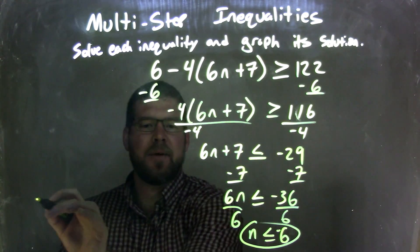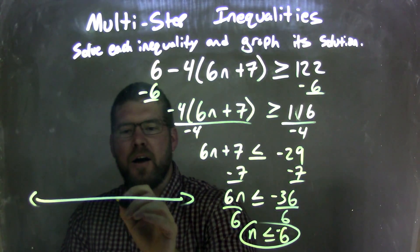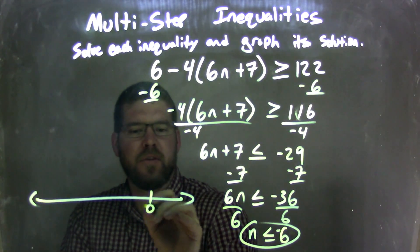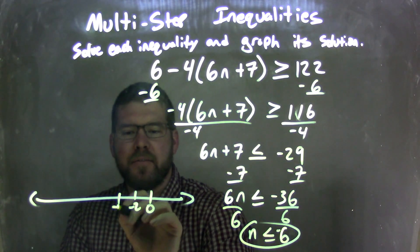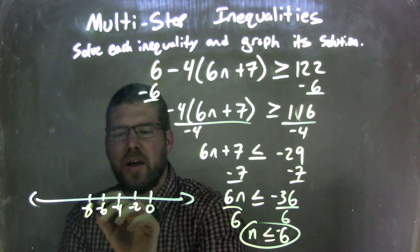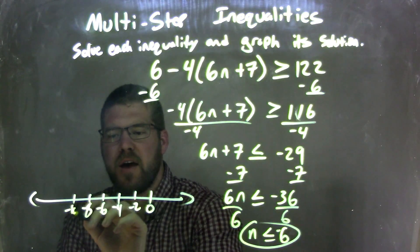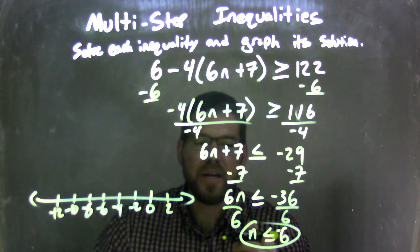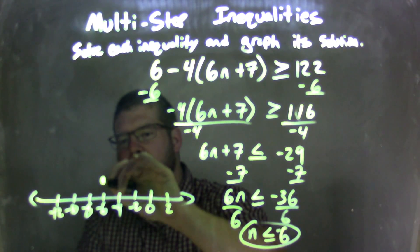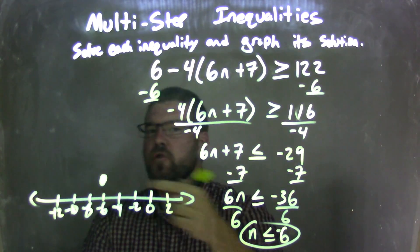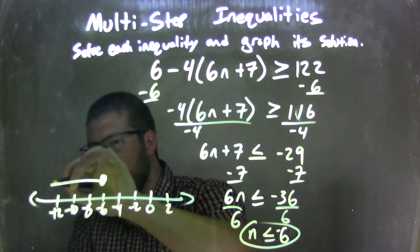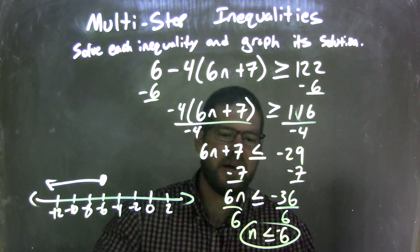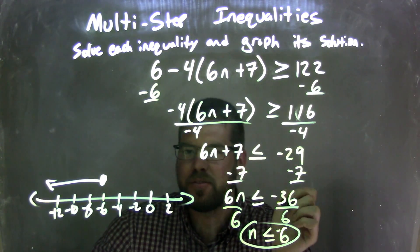So now I need to graph that. I'm going to graph it right here on a number line, going by 2s: 0, negative 2, negative 4, negative 6, negative 8, negative 10, negative 12, and positive 2. Since n is less than or equal to negative 6, I have a closed circle at negative 6, and I need to shade to the left — because we said n is less than that negative 6. So now our graph matches our final answer: n is less than or equal to negative 6.